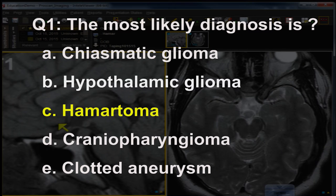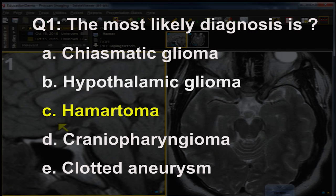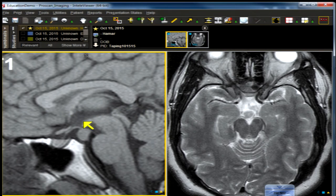Question one: the most likely diagnosis is hypothalamic hamartoma of the tuber cinereum. It is a hamartoma — not a glial neoplasm — a benign dysplastic low-grade abnormality that may produce clinical symptoms but not those of mass effect or obstruction. Unlike a true hypothalamic neoplastic glioma, which exhibits necrosis, occasional hemorrhage, large size, and interval growth, located more in the hypothalamic region proper.